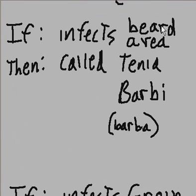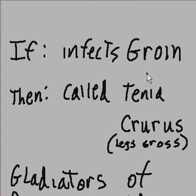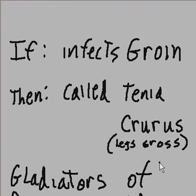If it infects the beard area, then it is called tinea barbae. And in Spanish it became 'barba,' the beard area. If it infects the groin, then it is called tinea cruris — that's where the legs cross, also known as the place where the legs cross.